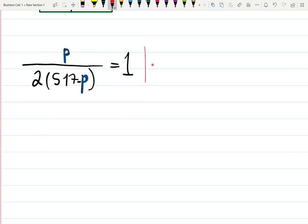You can check my other video where I practice how to work with fraction equations. Basically, I will multiply by the denominator to get rid of the fraction: 2 times (517 - p) on the left-hand side and right-hand side.